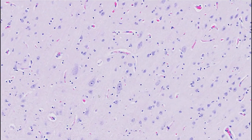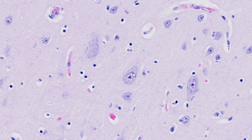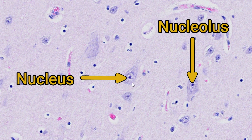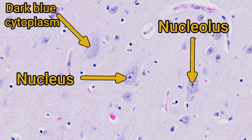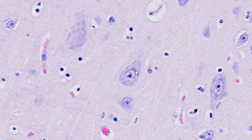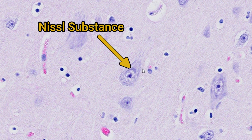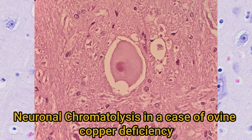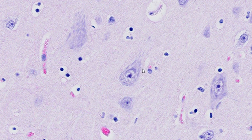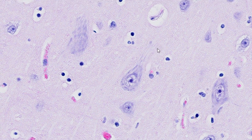Neurons have quite distinctive features. They have large nuclei which often have very dispersed chromatin and a prominent nucleolus. The cytoplasm is quite dark blue due to a large amount of RNA present - this is called Nissl substance - and loss of the Nissl substance can be a sign of early neuronal degeneration, an appearance known as chromatolysis. Sometimes if the neuron is cut in the right section you'll be able to see the axon extending away from the cell body.